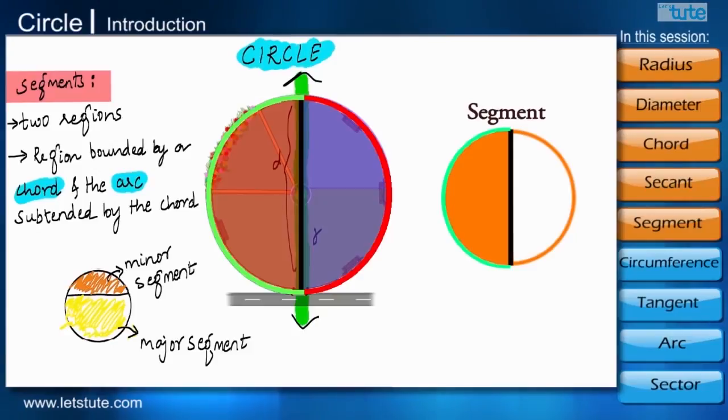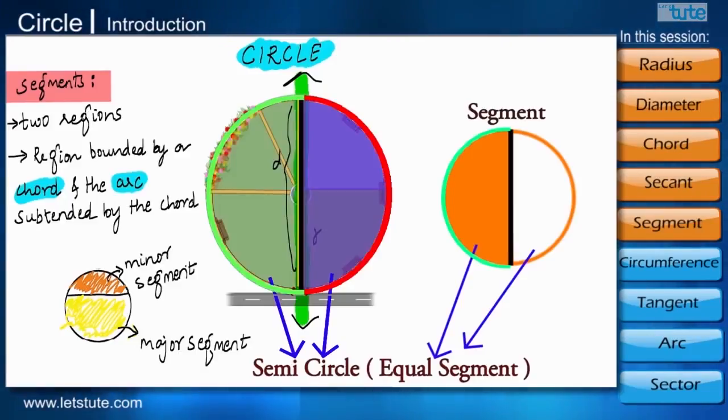If the chord or a secant is a diameter, then the circle gets divided into two equal regions. And in our case, it gets divided into two equal semicircles.